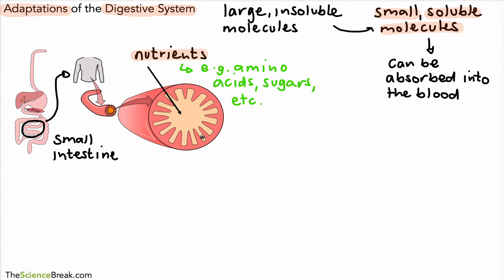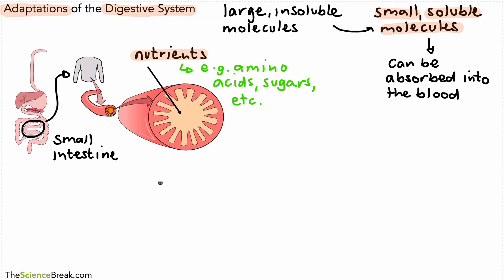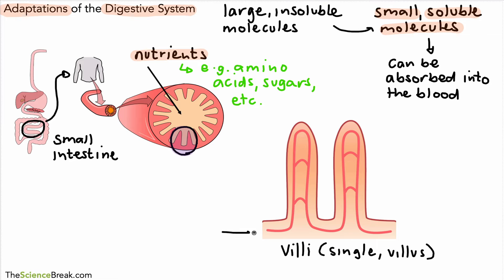Now let's take a look at these finger-like projections that are poking out. Here is a 3D version of those — you can see they are literally like fingers poking out from inside the small intestine. If we focus in on just a couple of those, we can see what they look like in more detail. These are called villi. A single one is called a villus, and if you have more than one we say villi. These are really important in the digestive system, specifically in the small intestine.